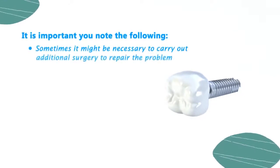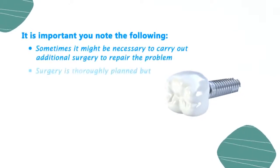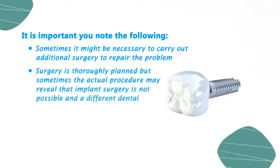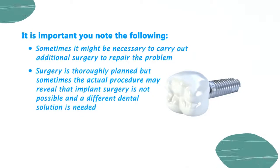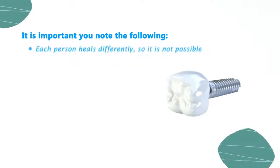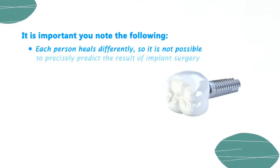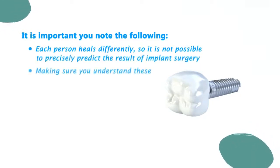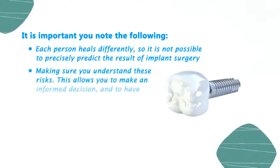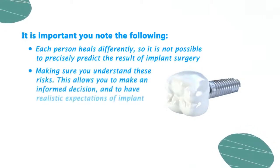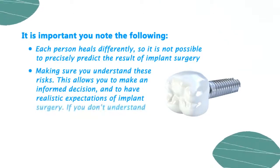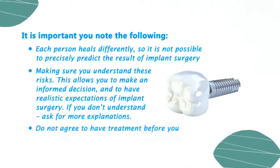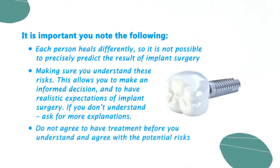It is important to note the following: sometimes it might be necessary to carry out additional surgery to repair the problem. Surgery is thoroughly planned, but sometimes the actual procedure may reveal that implant surgery is not possible and a different dental solution is needed. Each person heals differently, so it is not possible to precisely predict the result of implant surgery. Making sure you understand these risks allows you to make an informed decision and to have realistic expectations. If you don't understand, ask for more explanations — do not agree to have treatment before you understand and agree with the potential risks.